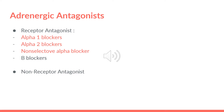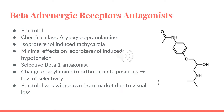Now we're done with the alpha-1 blockers, alpha-2 blockers, and non-selective alpha blockers. For the beta adrenergic receptor antagonists, we have practolol. Its chemical class is aryloxypropanolamine. It is an isoproterenol-induced tachycardia blocker with minimal effects on isoproterenol-induced hypotension. It is a selective beta-1 antagonist. If we change the acylamino to ortho or meta position, we lose the selectivity. The acylamino is the group on top of the molecule. However, practolol was withdrawn from the market due to visual loss.